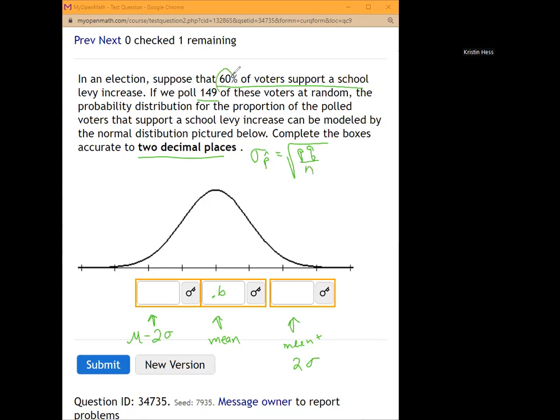So p is 60%, q is equal to 1 minus 60% as a decimal. So take 60 and divide it by 100. That's 0.6. So q is 1 minus 0.6 equals 0.4. So we'll take the square root of 0.6 times 0.4 all over 149.